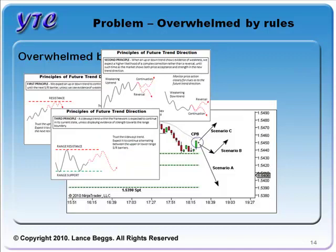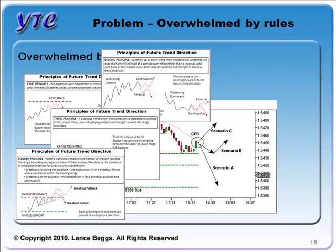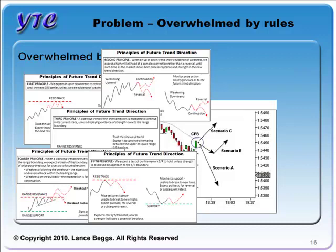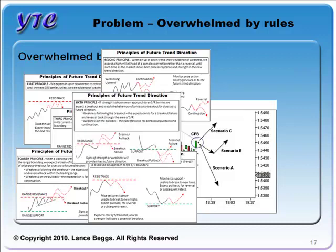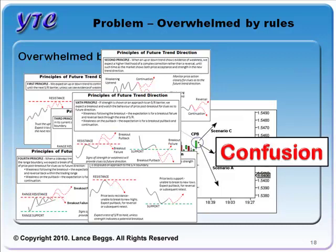Rule three: a sideways trend is expected to continue unless displaying evidence of strength towards the range boundary. Rule four: when a sideways trend shows strength towards the range boundary, we expect a break of the boundary — weakness following the breakout suggests breakout failure and reversal; weakness on the pullback suggests breakout pullback and continuation. Rule five: we expect a test of framework support and resistance to hold, unless strength is displayed on approach to the SR boundary. Rule six: if strength is shown on approach to an SR boundary, we expect a breakout. Weakness following the breakout suggests breakout failure; weakness on the pullback suggests continuation. The end result appears to be confusion.